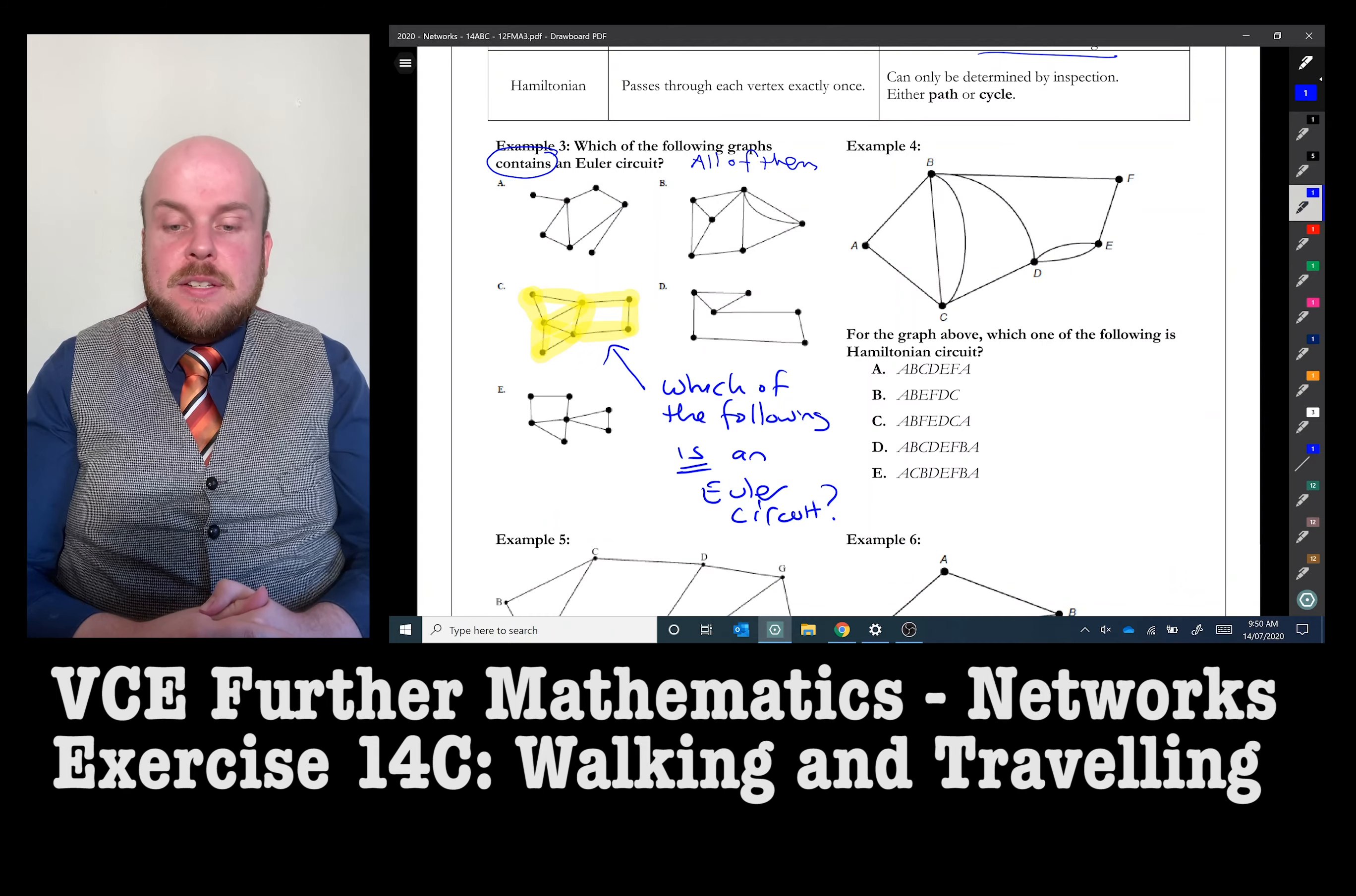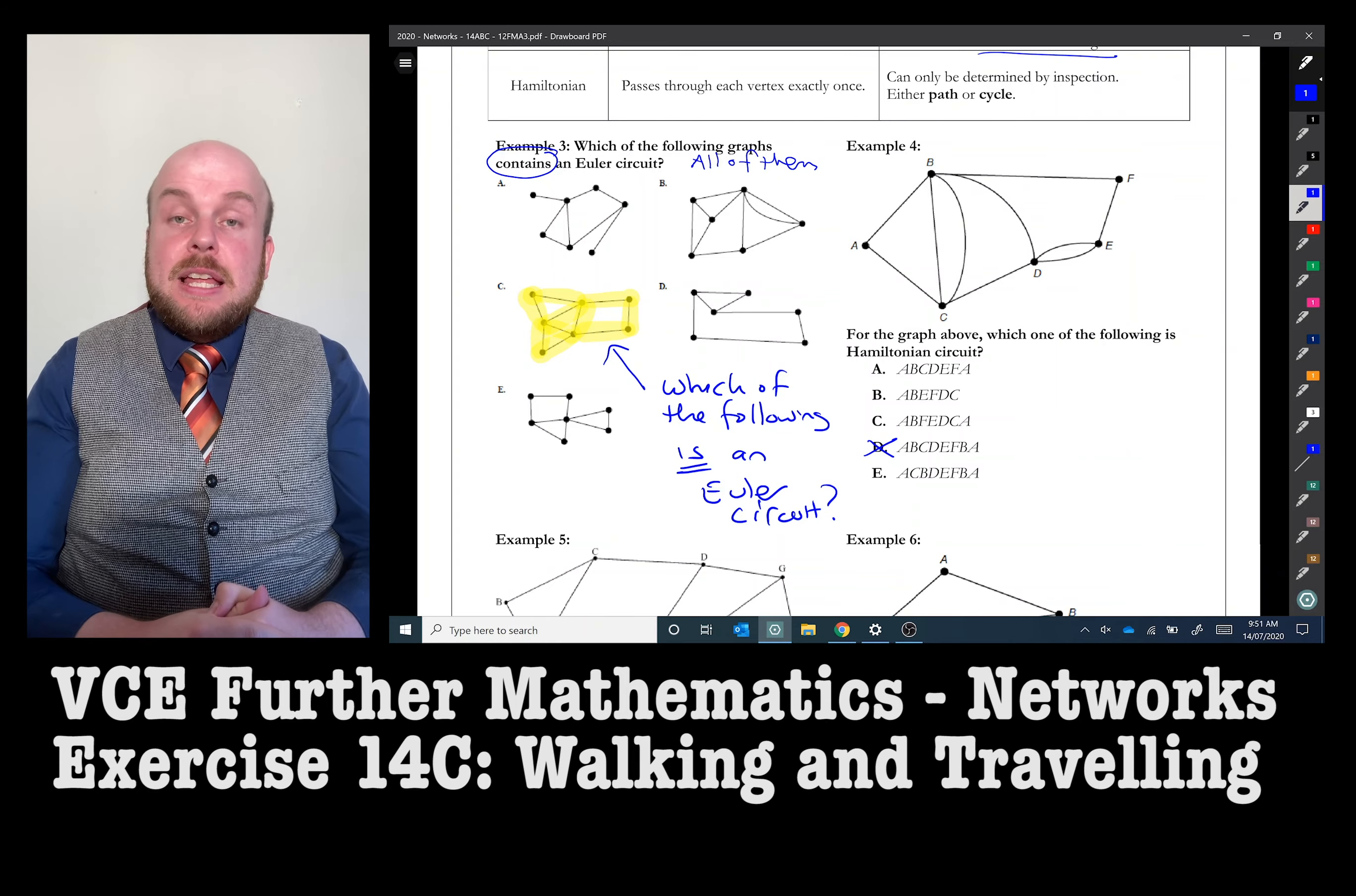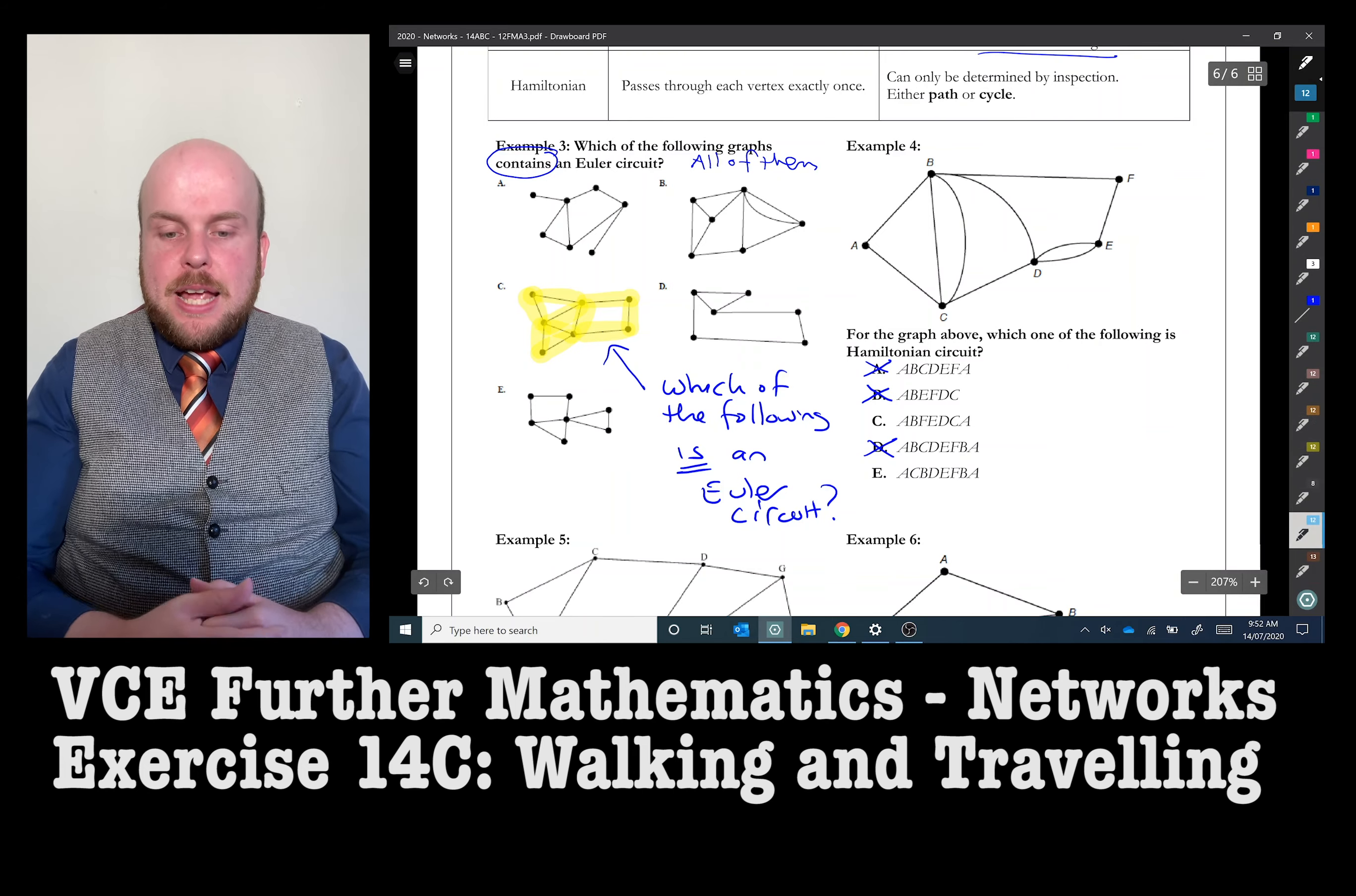In example four, I have asked for the graph above which of the following is a Hamiltonian circuit. You could, of course, eliminate anything that doesn't start and end at the same vertex. You could also eliminate anything that is repeated. Any vertex apart from the start and end that is repeated. And then, if you've got two left over, as we do, you'll need to just simply draw it out.